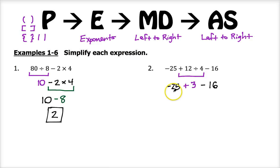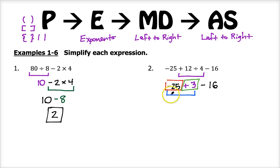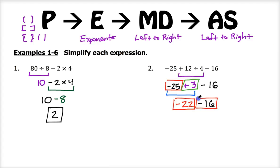Now there's no more multiplication or division, so this is just addition and subtraction from left to right. We start with negative 25 plus 3. Negative 25 and positive 3 have different signs, so we take the difference: the difference is 22 and it's negative 22. So now we have negative 22 minus 16. We're combining two negatives, so we add to get 38, but it's going to be negative 38 for our answer.